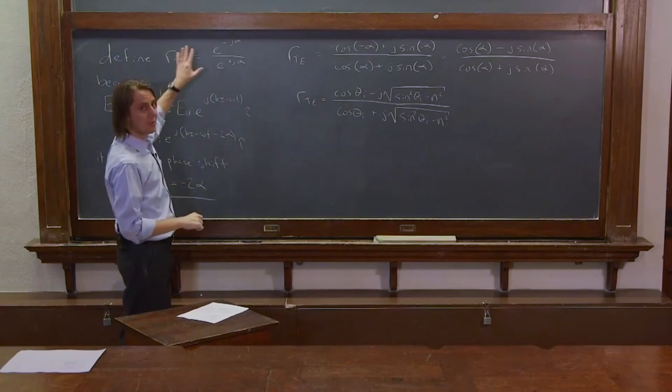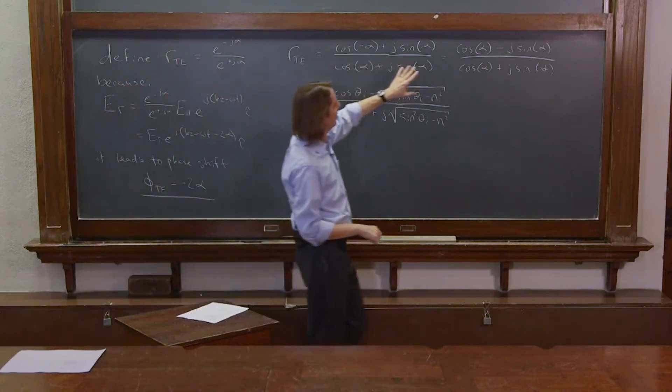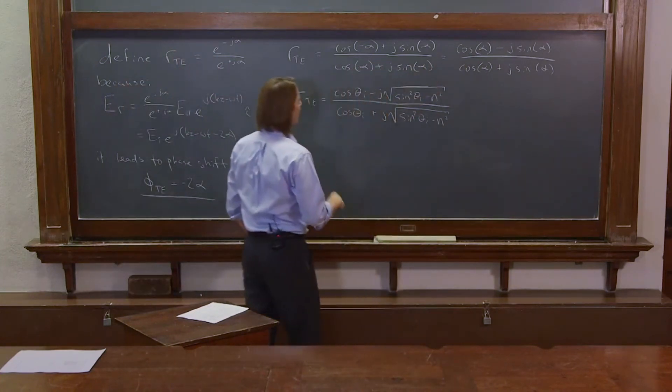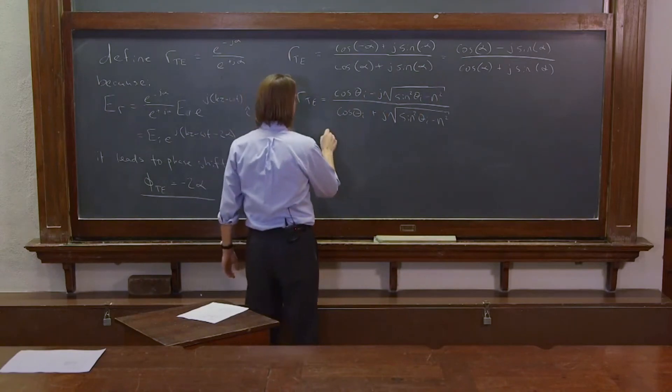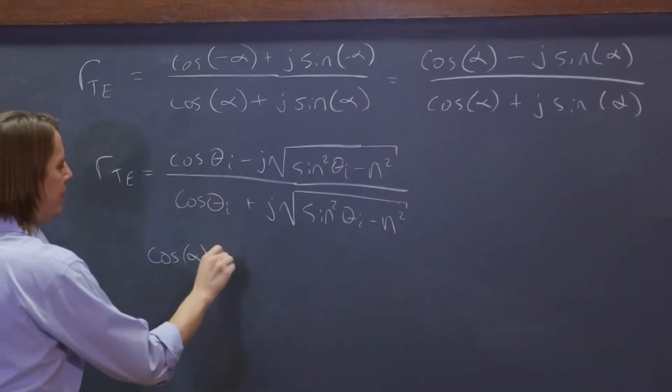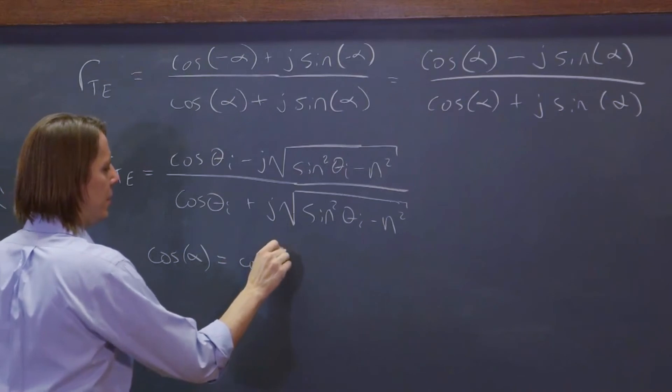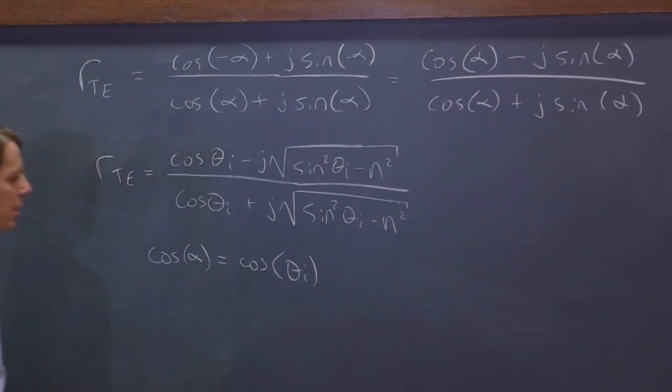And then you can see the other reason we chose this form is it looks very much like it matches. From here, we can say that the cosine of alpha equals the cosine of theta i.